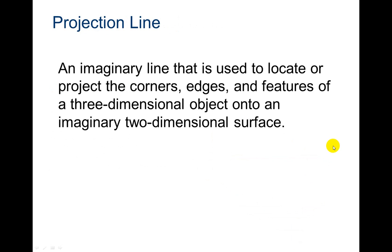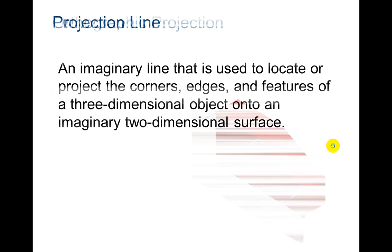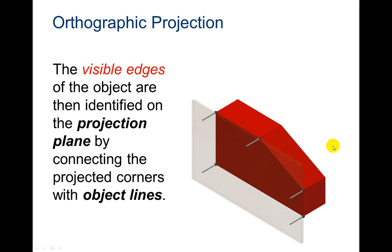An imaginary line that is used to locate or project the corners, edges, and features of the three dimensional object onto imaginary two dimensional surface. And this is the slide where they show the visible edges. The projection plane by connecting the projected corners. And you're going to fill that in with your object lines.